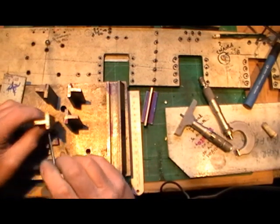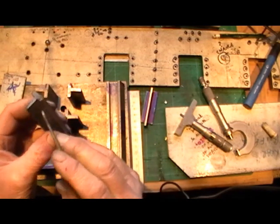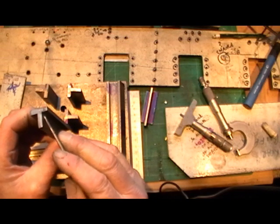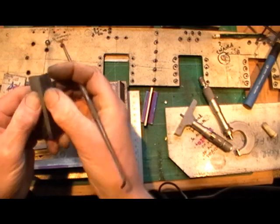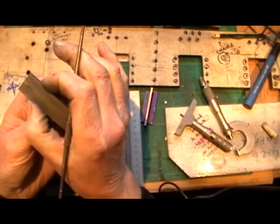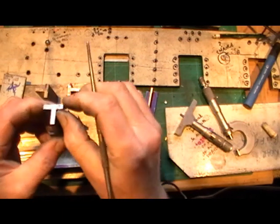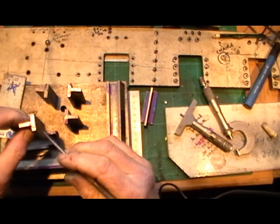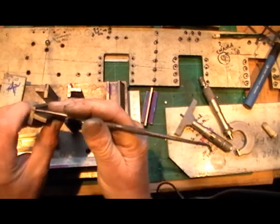So I've reduced the important dimensions on the horn guides is this small leg, depth, the thickness and the width of the face. So if you can get them three as near as you can, you've cracked it.